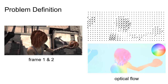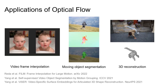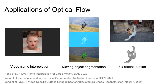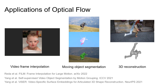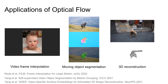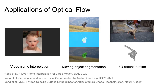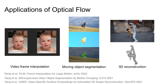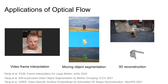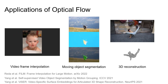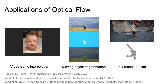Optical Flow has wide applications in video-based tasks. For example, since Optical Flow can provide motion and dense correspondence information, it can be used for video frame interpolation, moving object segmentation, and 3D reconstruction.